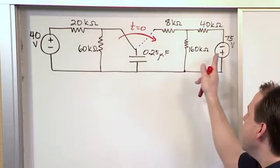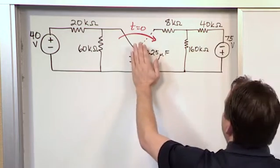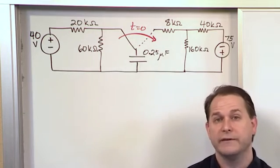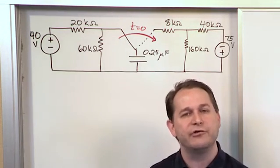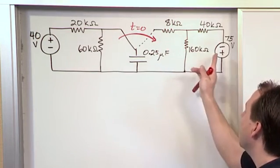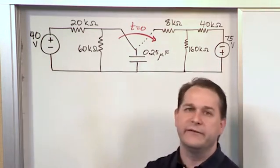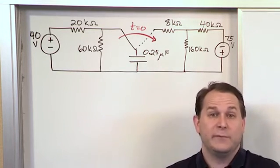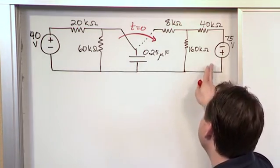Now when we switch it over, if we didn't have the source here, if the source wasn't even here, it was just a straight wire, then the capacitor would simply discharge into those resistors and we would have what we call the natural response before when everything is just bleeding off. But we're not discharging into just resistors. We're connecting the capacitor into a resistor network with a 75 volt source. And notice the 75 volts is bigger than the source on the other side of the circuit. And so because of that, the capacitor is basically going to be accepting even more charge or more current coming in from this side over here.